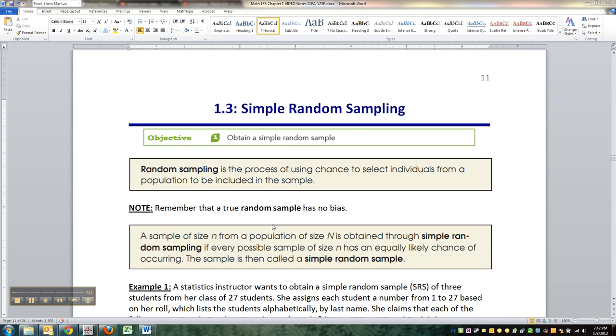Now random sampling is the process of using chance to select individuals from a population to be included in the sample. Remember that a true random sample has no bias. In other words everybody's got an equally likely chance of getting picked.